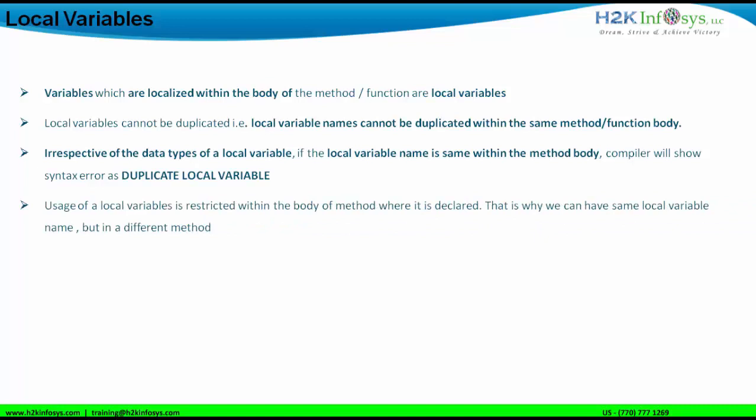Usage of local variables is restricted within the body of the method or function where it is declared. So the power of the local variable is within the body of the method in which it is initialized and declared. That is why two different methods can have the same variable name — we can have the same local variable name, but in different methods.